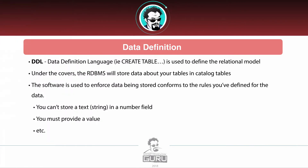DDL stands for data definition language. We've already seen some examples of creating tables — data structures used in the database. Underneath the covers, the RDBMS stores data about your tables in catalog tables, which some people call metadata — data about data. This defines the structure of the data you're storing and creates rules, like you can't store text inside a number field. If you try to put the word FRED in a number field, the database will throw an error.